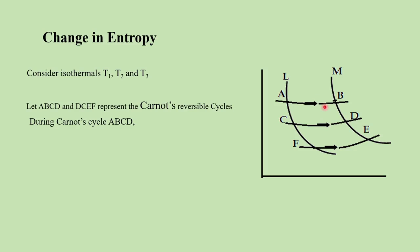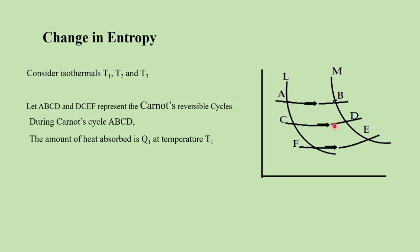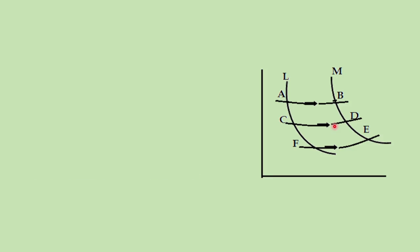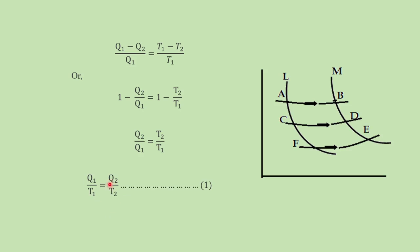Q1 is the amount of heat absorbed at temperature T1, and the amount of heat rejected is Q2 at temperature T2. We can find the efficiency of Carnot's cycle as seen in our last lectures. It is given by (Q1 minus Q2) upon Q1 equals (T1 minus T2) upon T1. Rearranging, we get Q2 by Q1 equals T2 by T1, and therefore Q1 by T1 equals Q2 by T2.